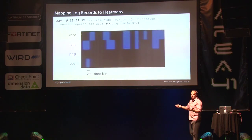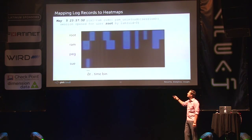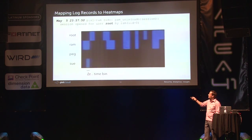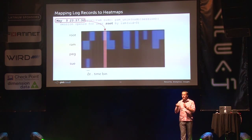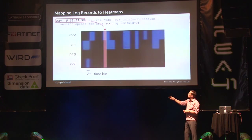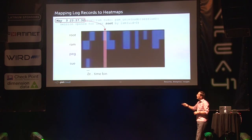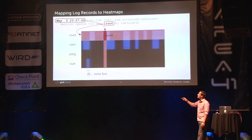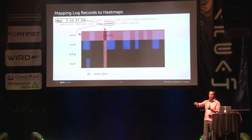Let's take a log record and map it into the heat map. We have a sudo su — someone became root on a machine. We take the timestamp, find the time bin it falls into — say, the May 5th 2300 hour. Not every timestamp gets its own column; we bin things into buckets of, say, an hour. Then we take the user 'root', which determines the row, and where they intersect, we apply a function — in this case I just add one because I saw one more event.